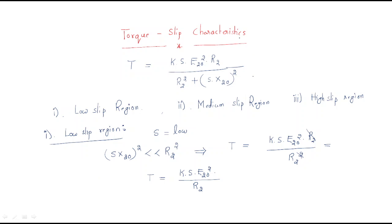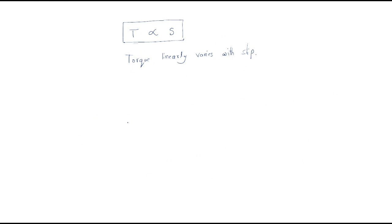In the last session we discussed the torque-slip characteristics, where we observed that in the low slip region, torque and slip are proportional to each other. Next we move on to the medium slip region — we can't assume a simple relationship there. Then we move on to the high slip region, which is the third point.